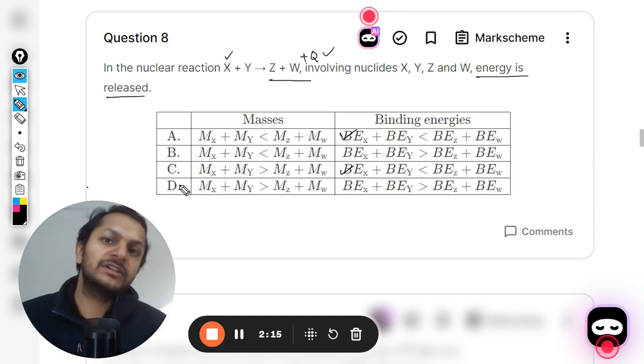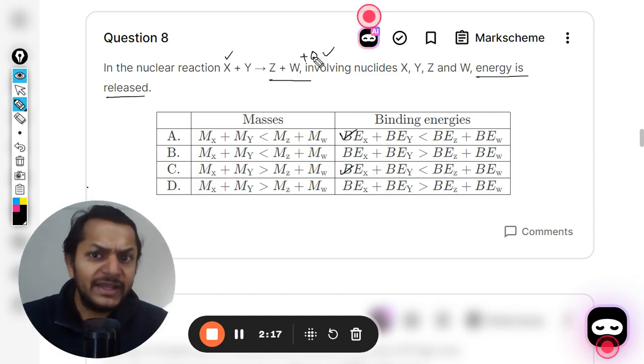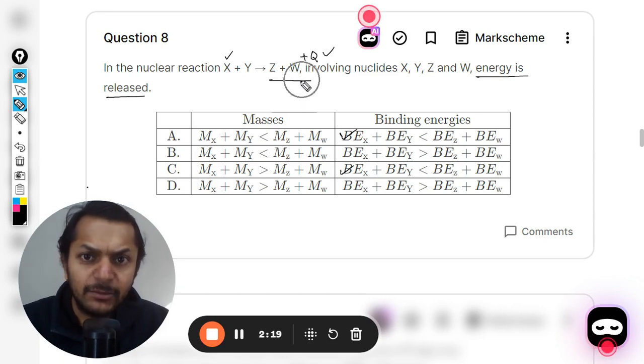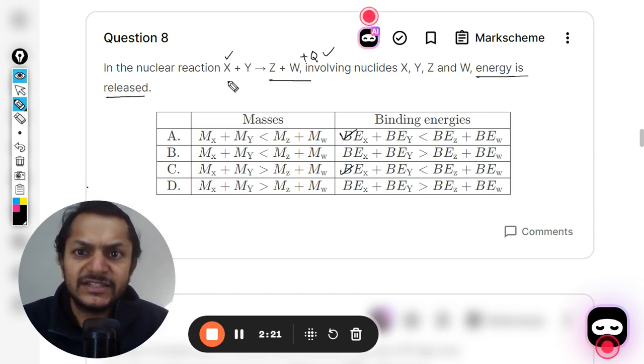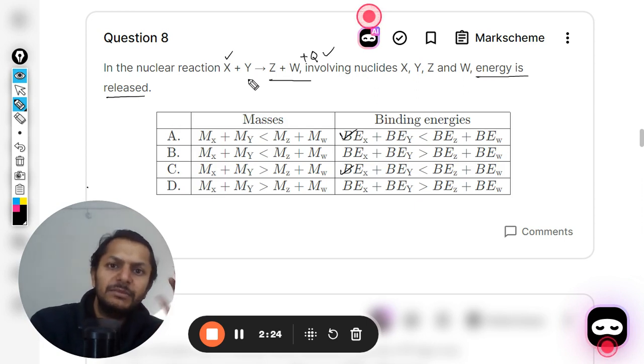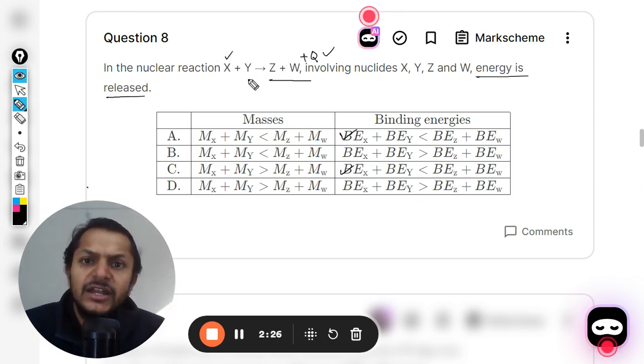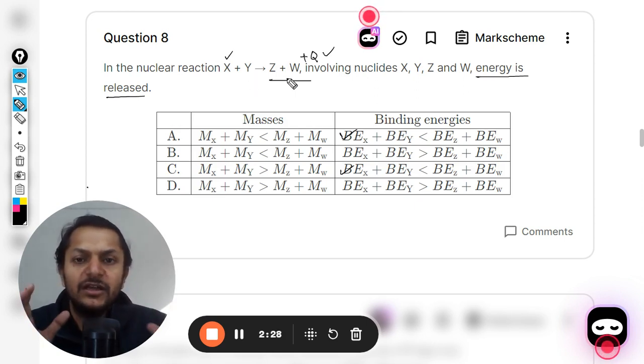So the answer will be either A and C, that we are sure about this thing. Now, so binding energy is more for Z and W, and binding energy is lesser for X and Y, because energy is getting released. Now if the energy is more, like more energy is released, from where is it coming?